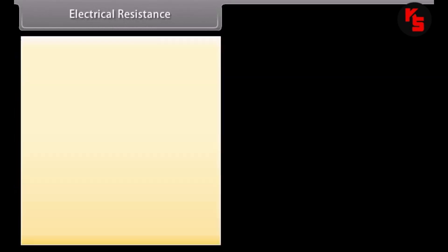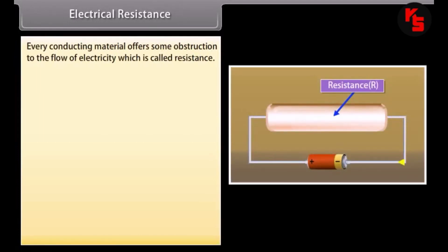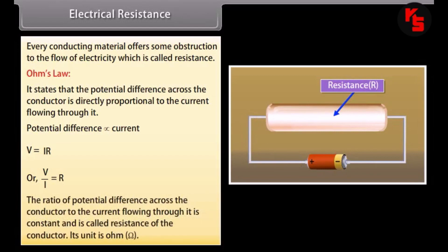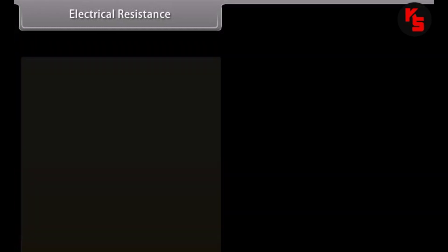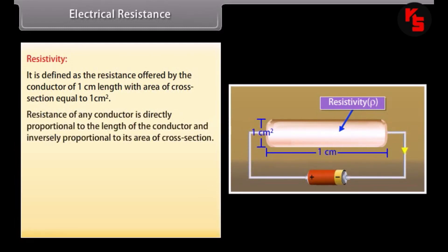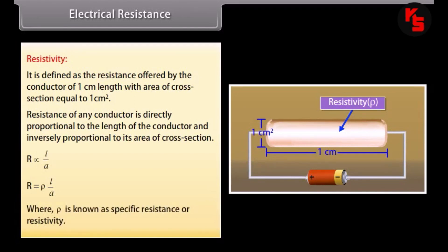Electrical resistance. Every conducting material offers some obstruction to the flow of electricity, which is called resistance. Ohm's Law states that the potential difference across the conductor is directly proportional to the current flowing through it: V = IR, or V/I = R. The ratio of potential difference to current is constant and is called the resistance of the conductor; its unit is Ohm. Resistivity is defined as the resistance offered by a conductor of 1 cm length with a cross-sectional area of 1 cm². The resistance of any conductor is: R = ρL/A, where ρ is the specific resistance or resistivity.